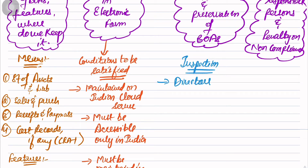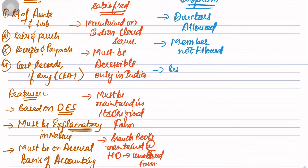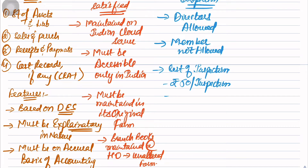So write: directors - allowed; members - not allowed. Cost of inspection: do they charge anything? Yes. Rupees 50 per inspection. But if you want to take copies, then rupees 10 per page. So: rupees 50 per inspection, rupees 10 per page for extracts or copies.